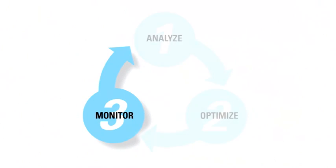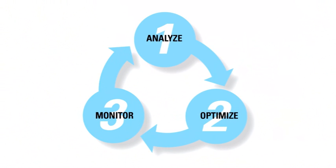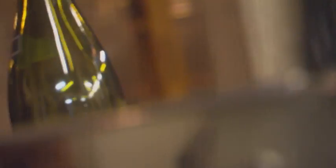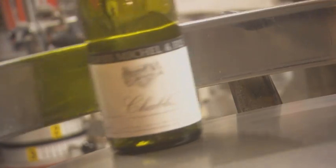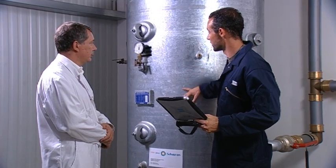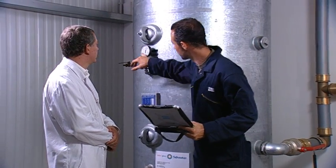With these three steps, Atlas Copco can help you save energy not once, but as a process of continuous improvement. The added value and easy implementation of our optimization solutions can be clearly demonstrated, and will help you to achieve sustainable productivity.